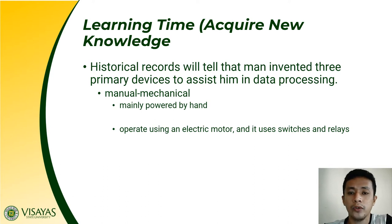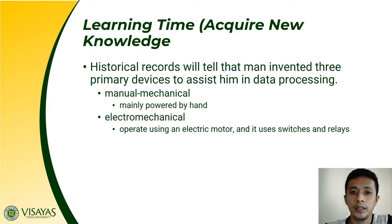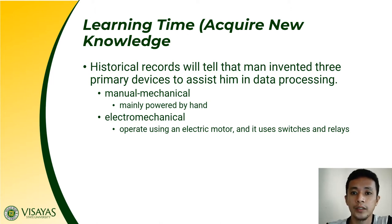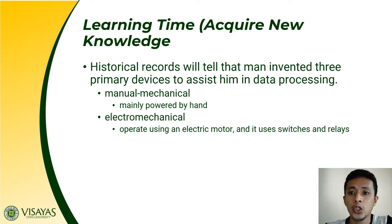Things are getting more complicated and more advanced as compared to manual mechanical. From manual mechanical, the electromechanical type of devices has been developed, wherein it uses electric motors, switches, and relays. So from machines which are mainly powered by hand, it now makes use of electric motor. There is a rotating device — the electric motor — which is used to provide electric current to make a device work. They are now more advanced since manual mechanical doesn't operate on the concept of electricity.